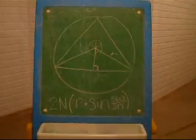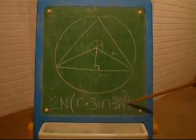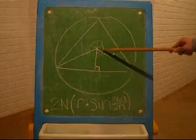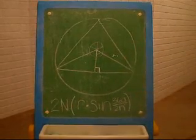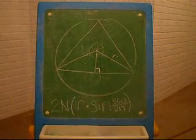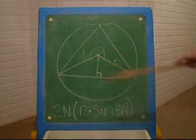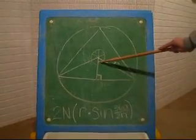The 360 over 2n comes from the center circle. A circle has 360 degrees, so we divided it by the number of sides times 2. That gives you this angle.